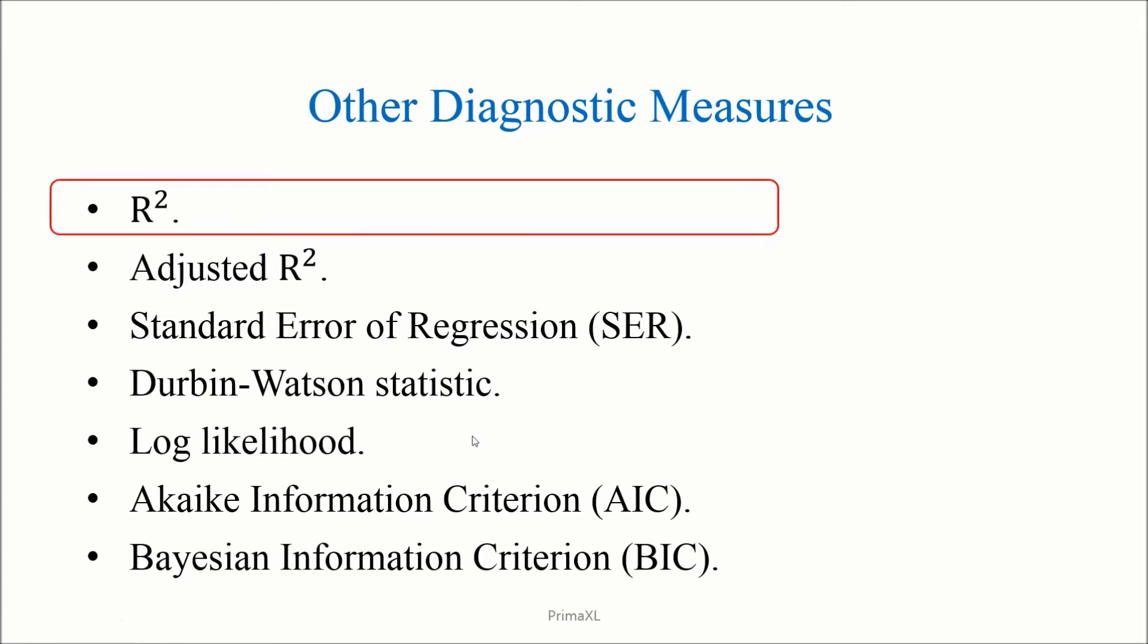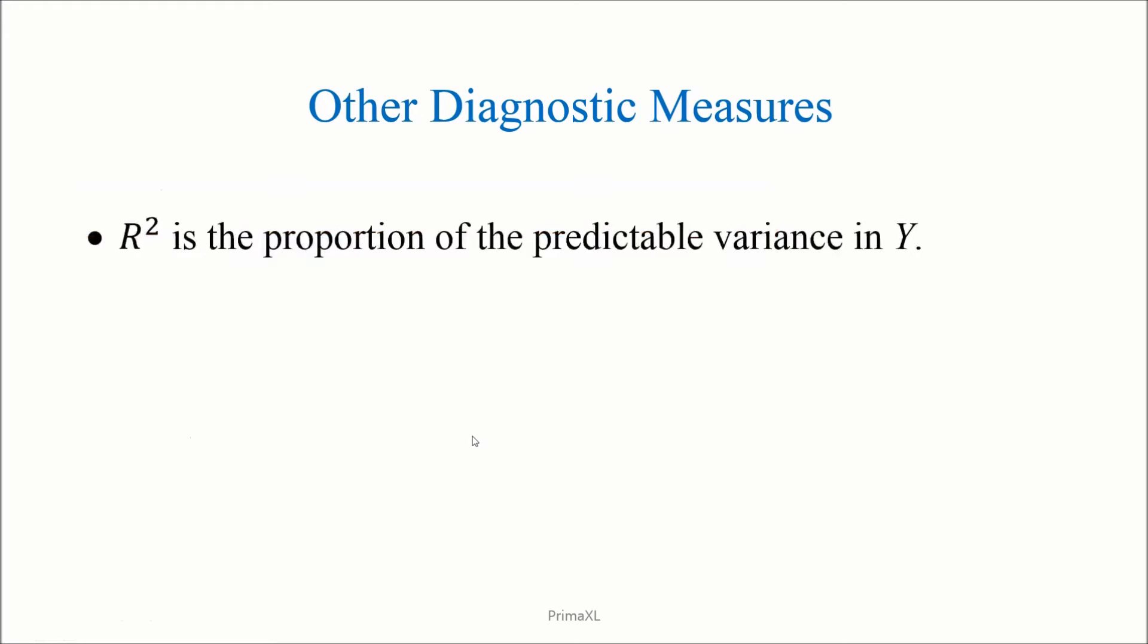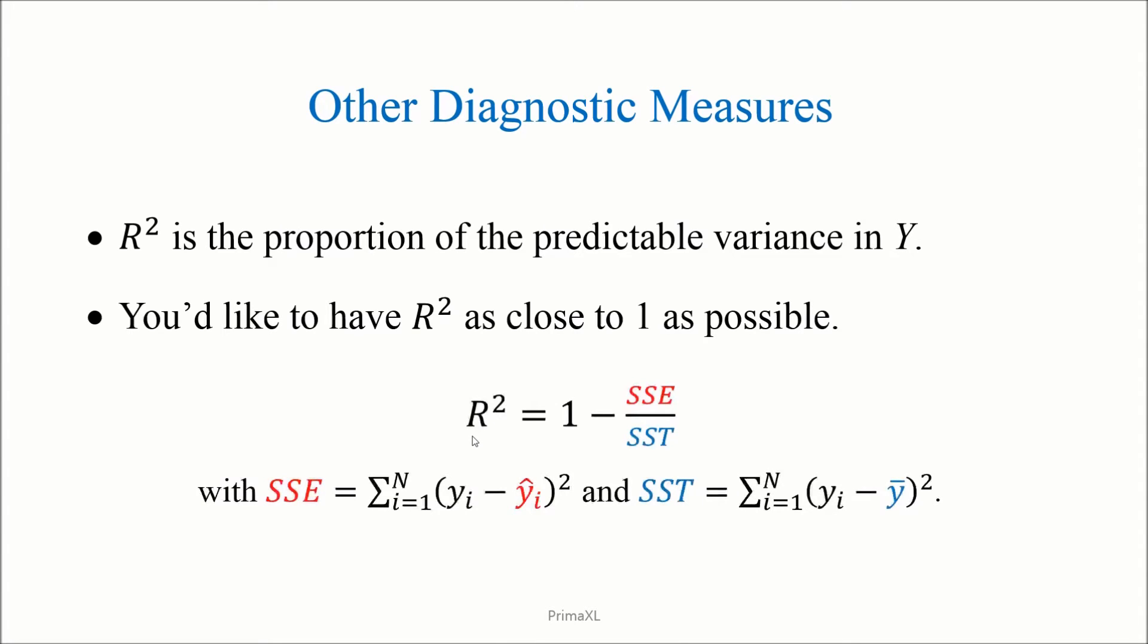One of the most important measures is the R-square. R-square is the proportion of the variance in the dependent variable that is predictable from the independent variables. And you like to have R-square as close to 1 as possible. Its formula is like this.